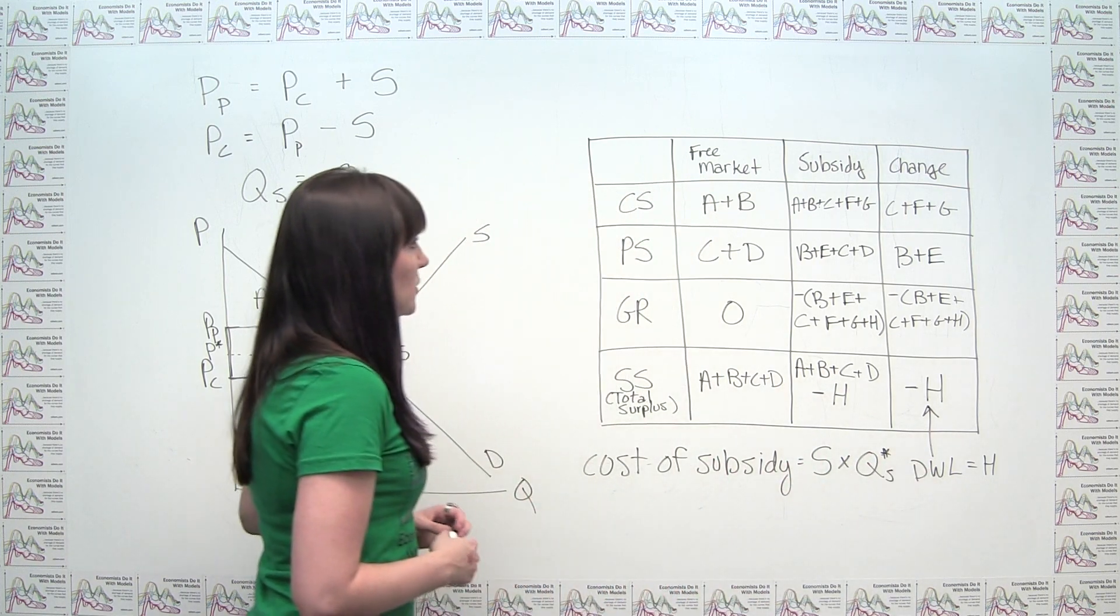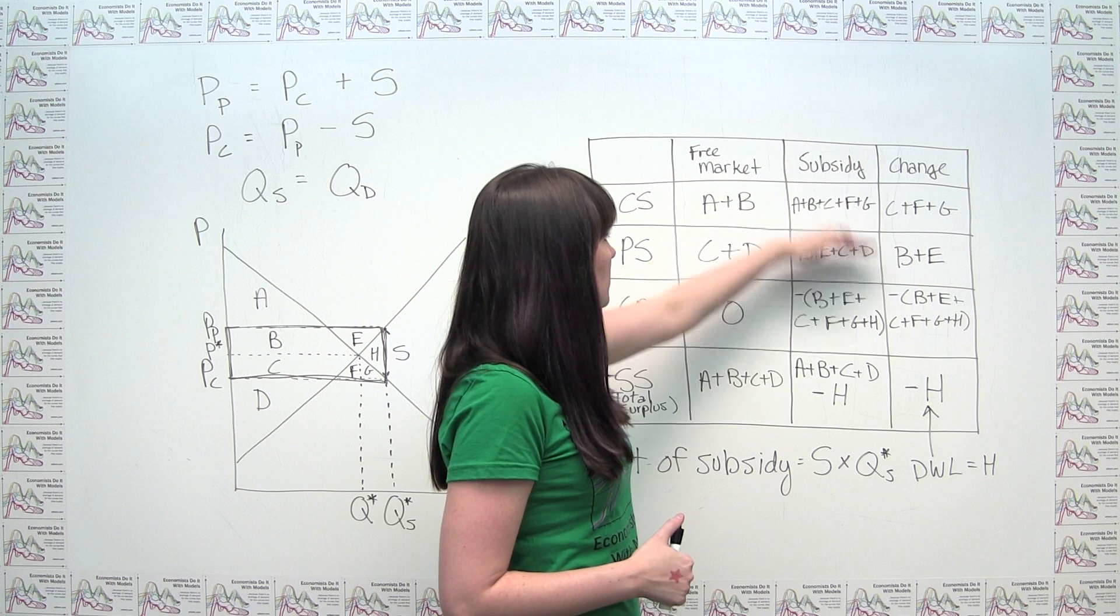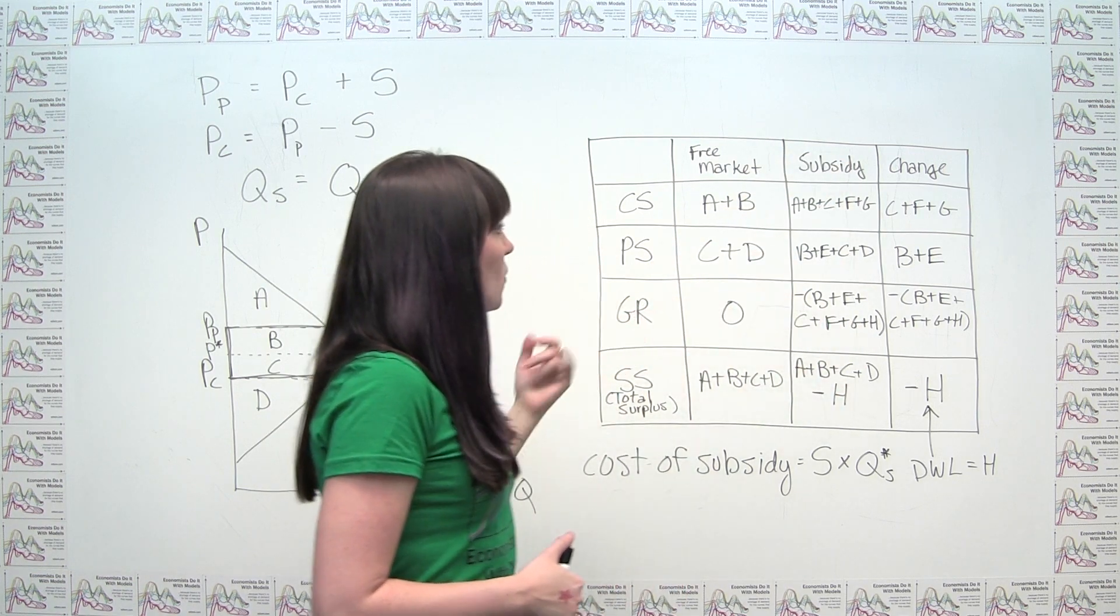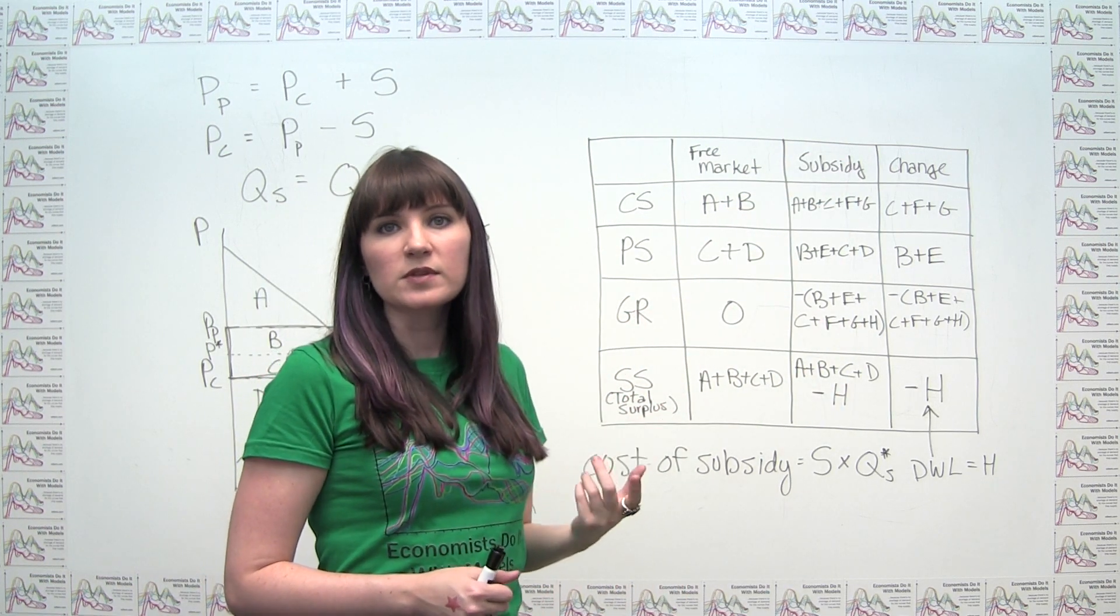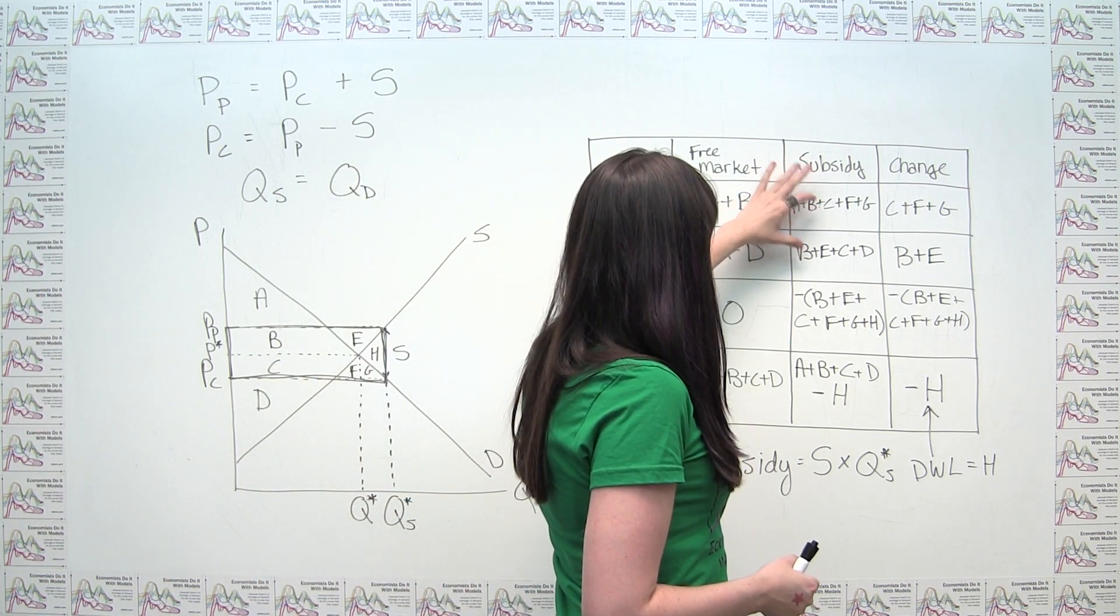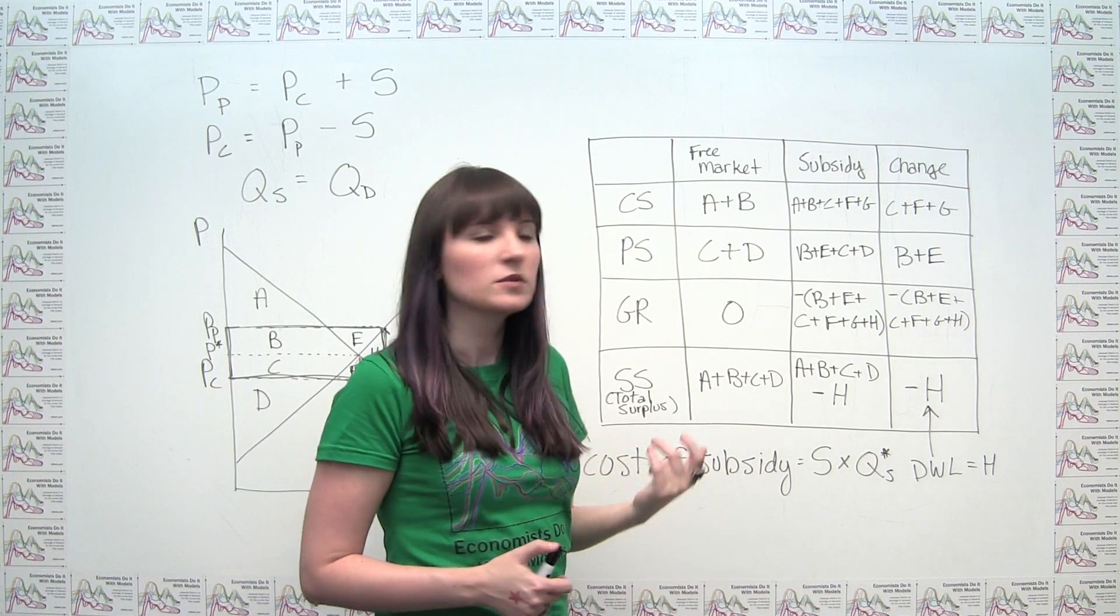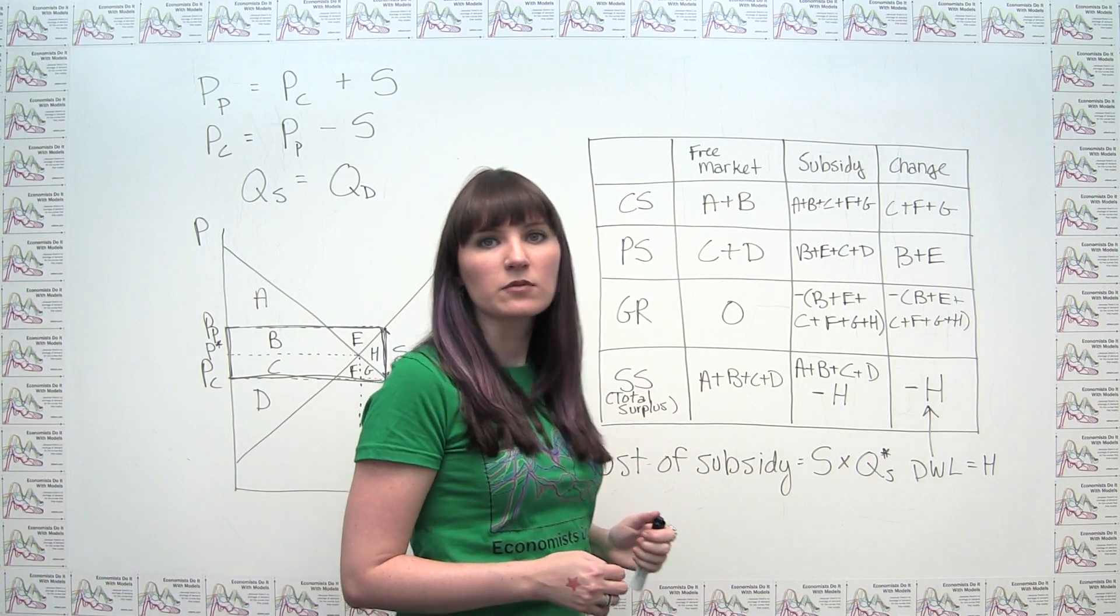The other thing that you may have noticed that's a little bit strange is that all of a sudden when we have the subsidy in place, we have areas that are going both to consumers and to producers. So you notice the area B was both here and here. The area C was both here and here. And so on and so forth. And you say, well, what's going on with that?